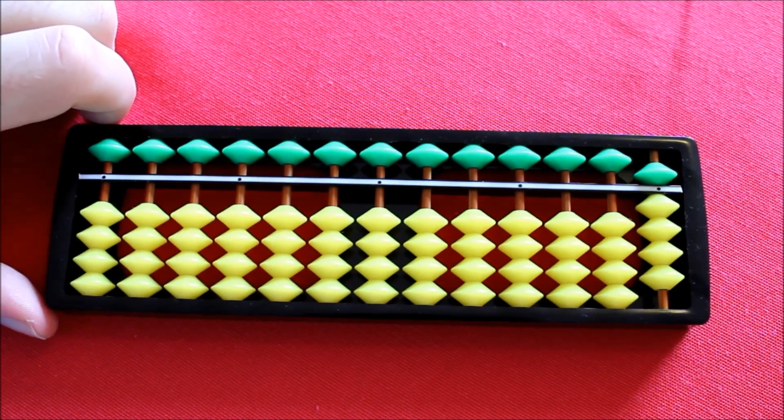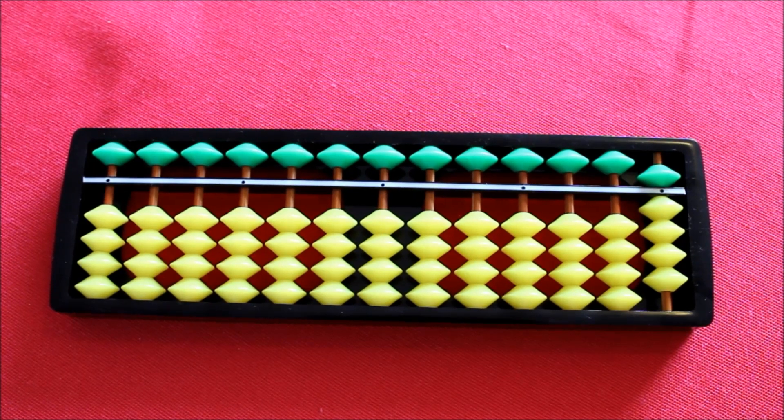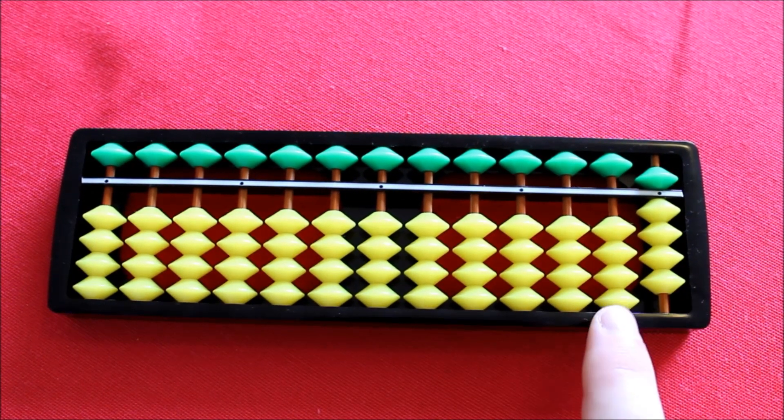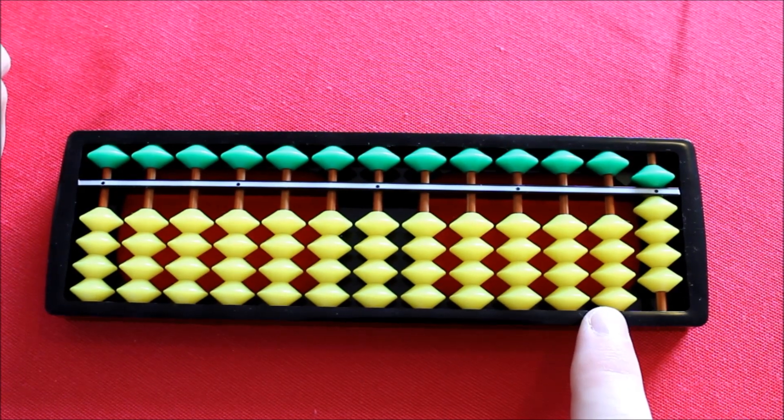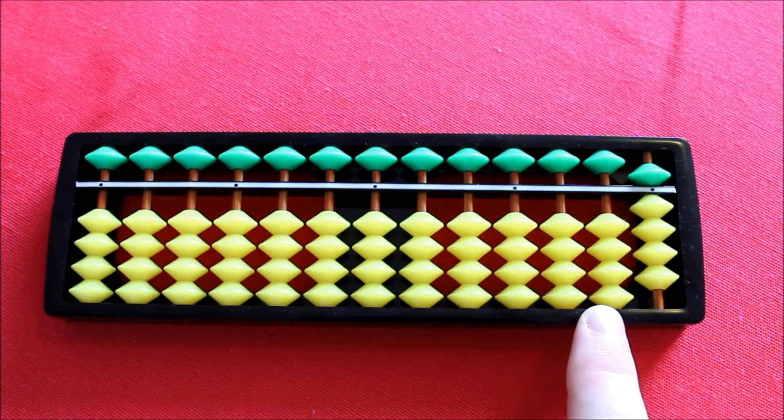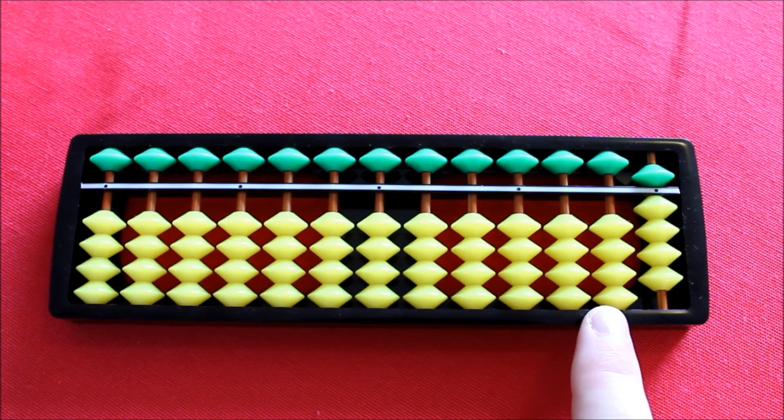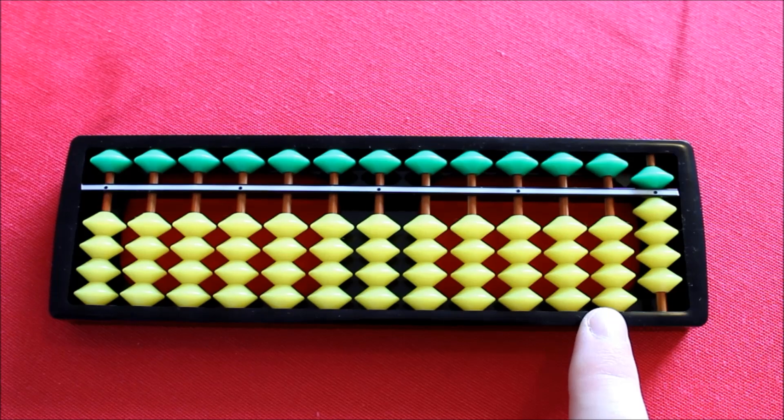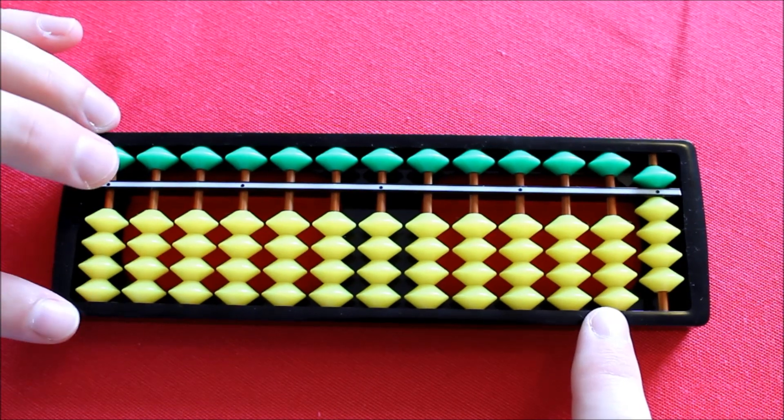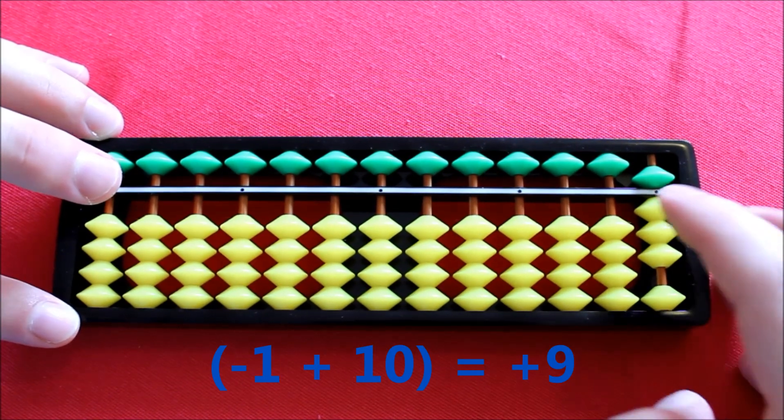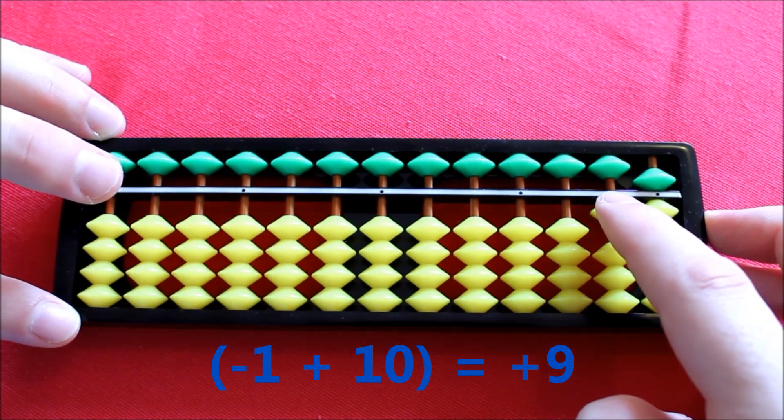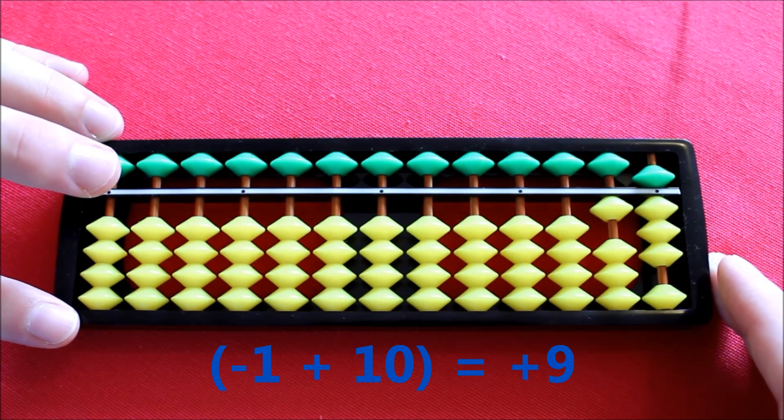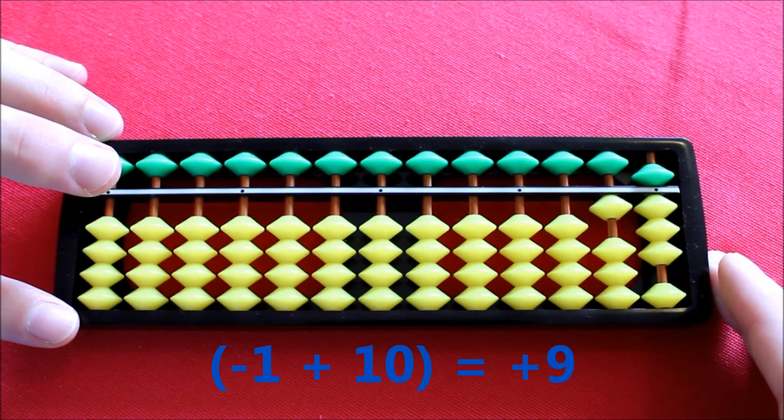But what about now if we wish to add 9 more? As in previous videos, we're going to have to move to this next column, the 10s column. I'm going to be adding 1 into that 10s column, which means I'll be adding 10. 10 is 1 more than the 9 that I wish to add. So firstly, I subtract 1 from this column. When I add 1 to the 10s column, the net result is I'll have added 9.